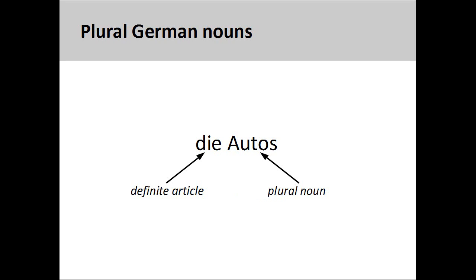The German noun 'Autos,' meaning cars, is plural, so its definite article is 'die.' It is important to distinguish the plural definite article 'die' from the feminine singular article 'die.'